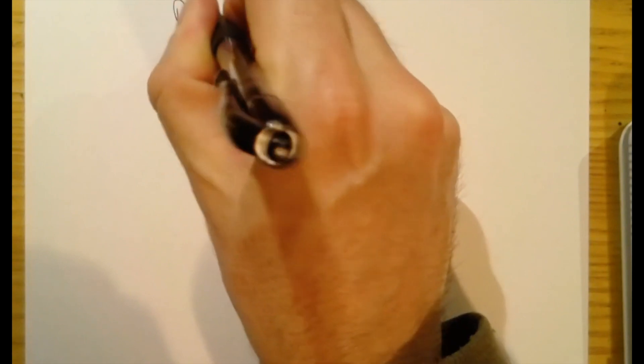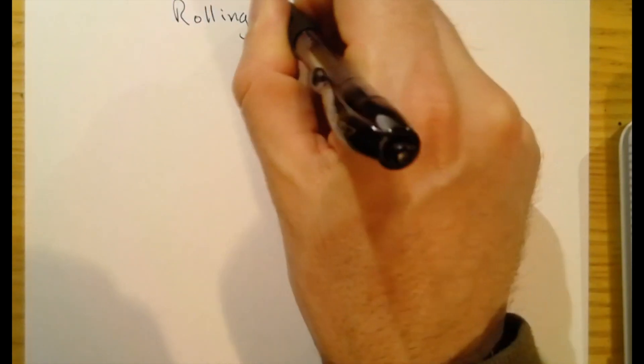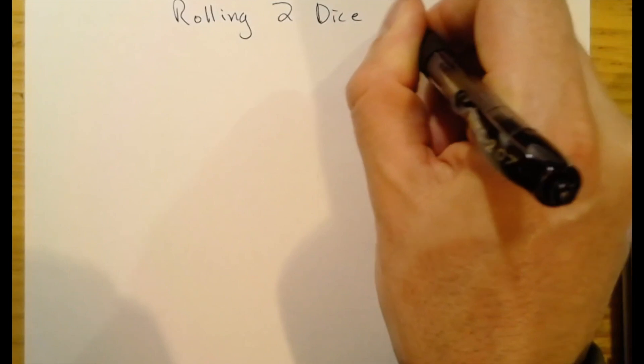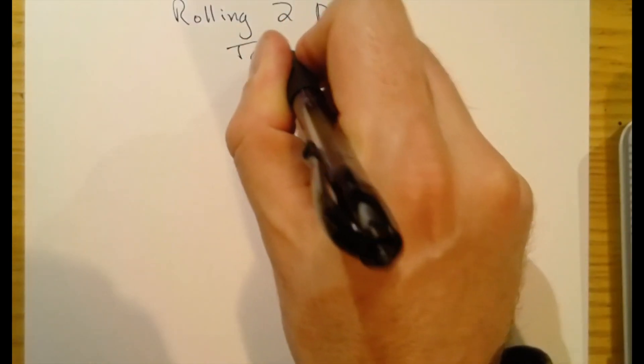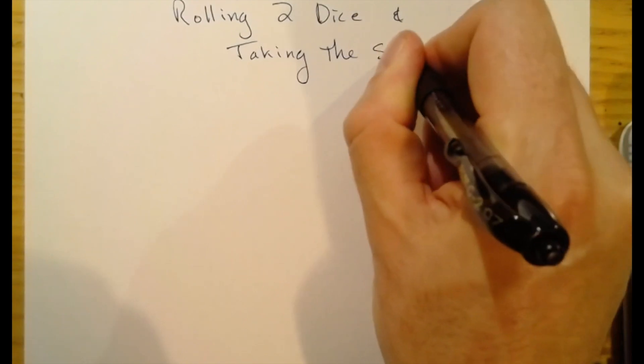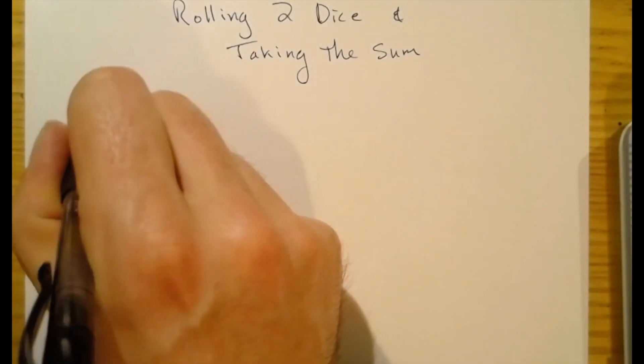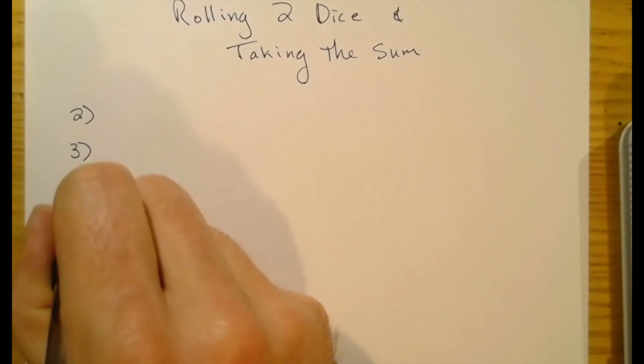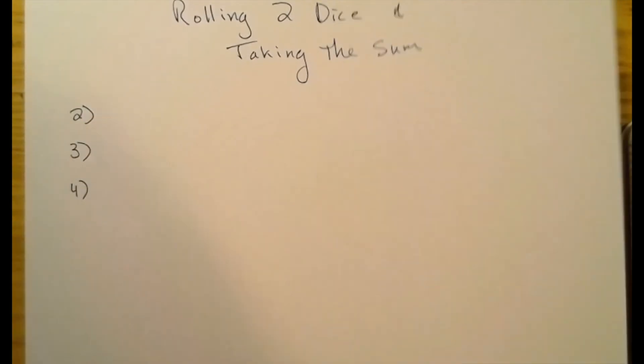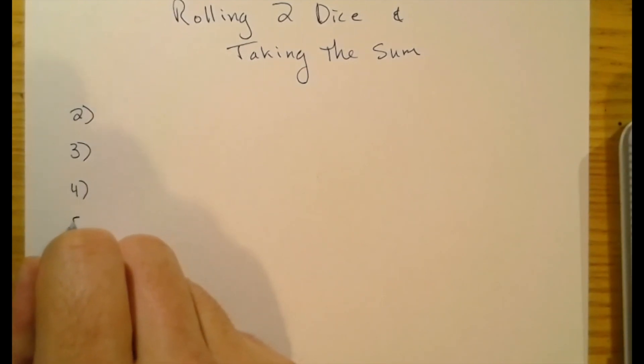So here's what we're going to do. Grab yourself a nice clean sheet of paper. Call it rolling two dice and taking the sum. And what you're going to want to do is number the paper from 2, 3, 4, all the way to 12. Start at 2. Don't start at 1 because you can't roll two dice and get a 1. But you can roll two dice and get a 2. Perfect. Alright.